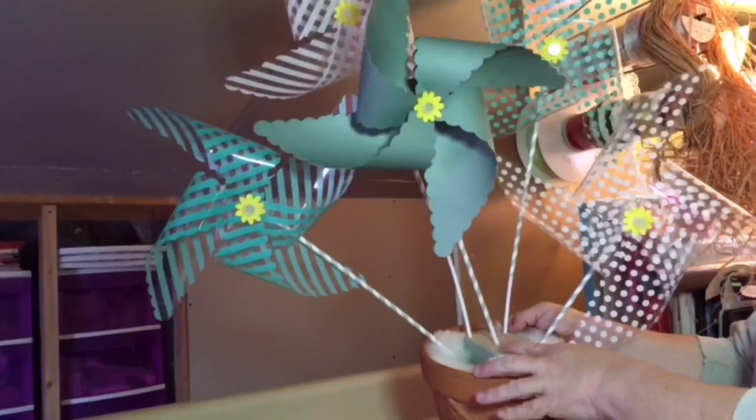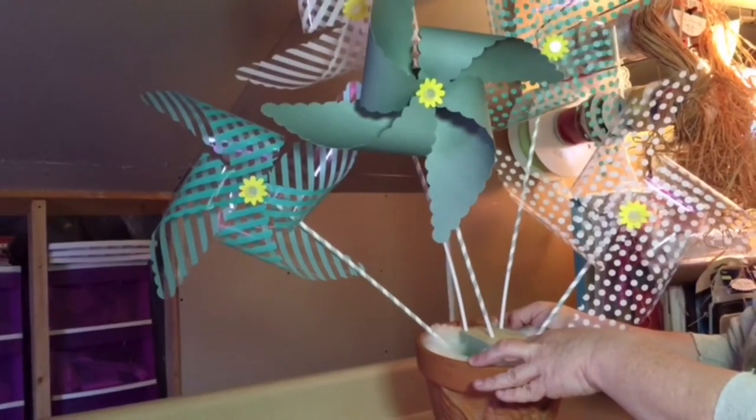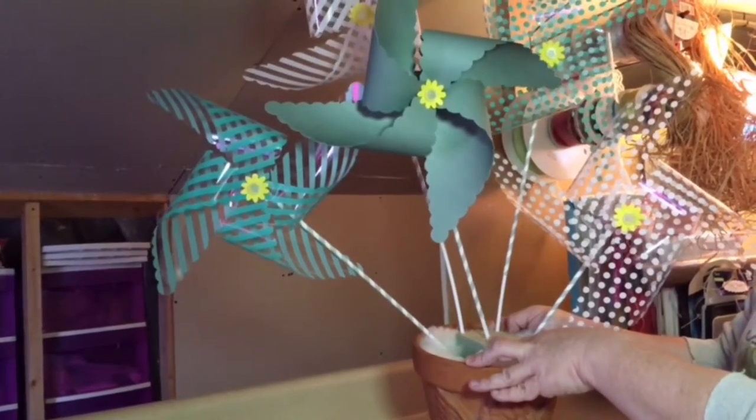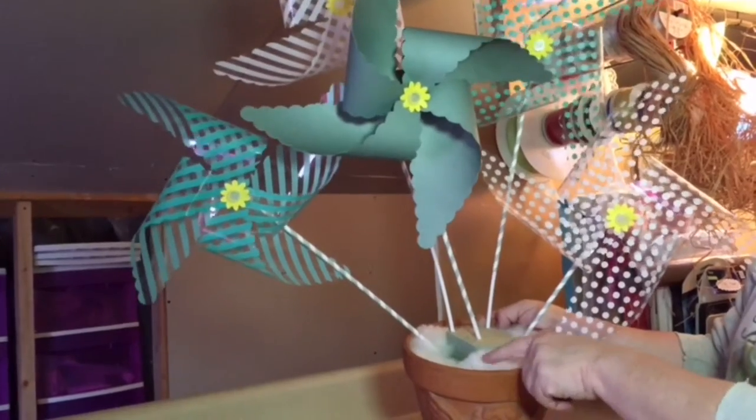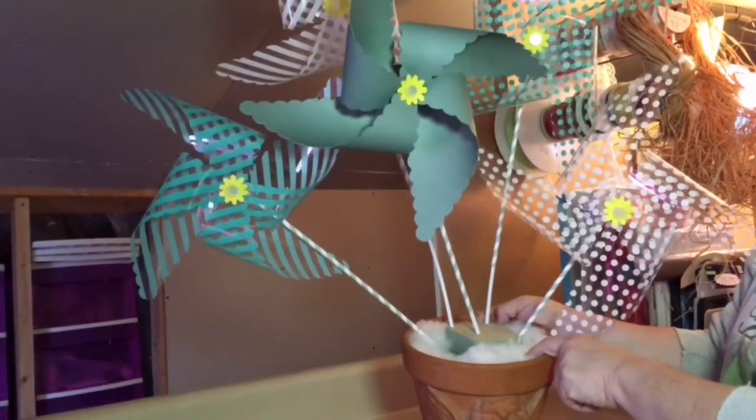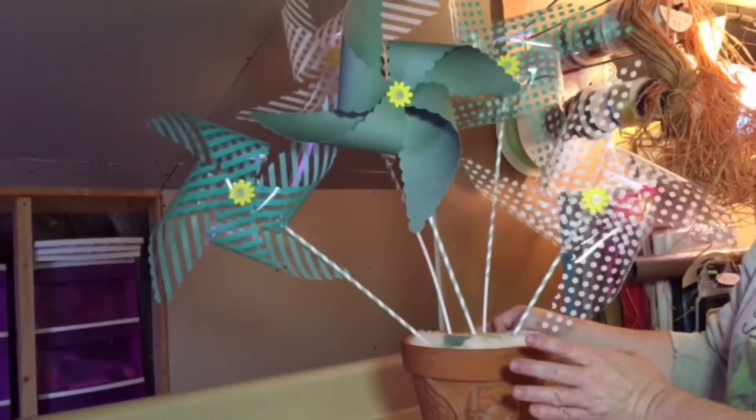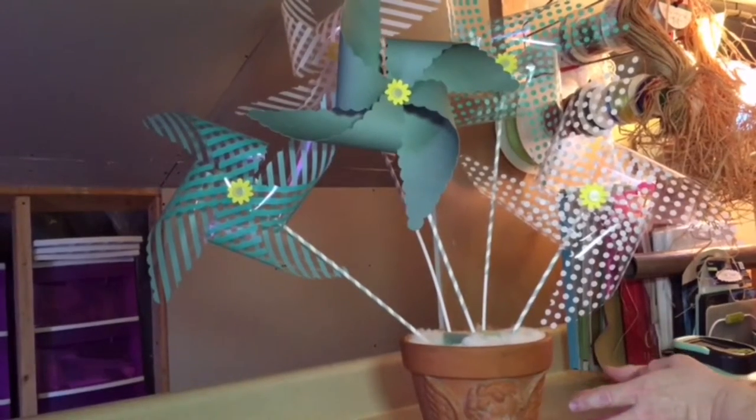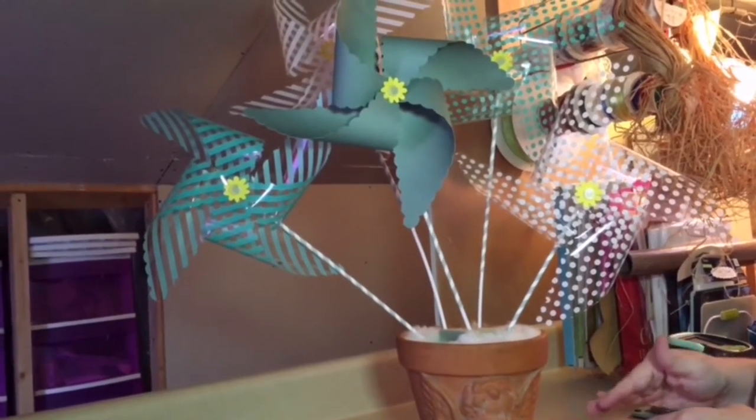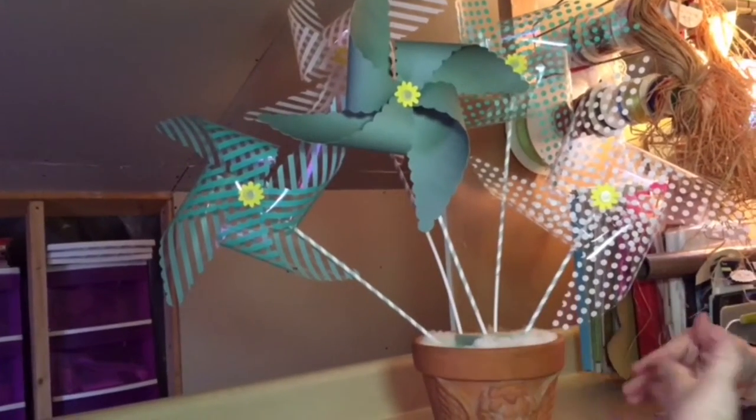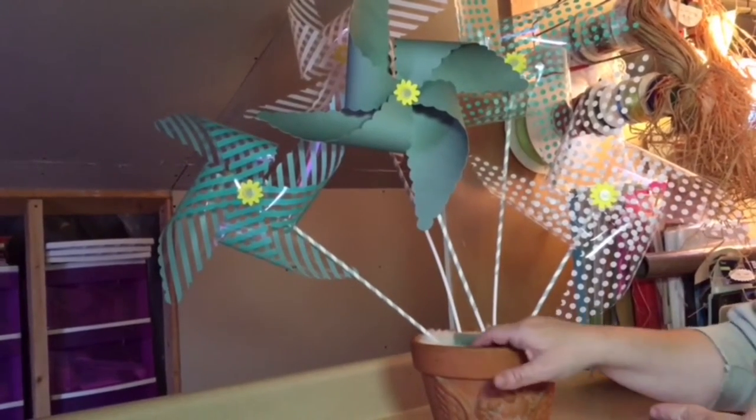I used some floral foam that is for dried or silk flowers in the bottom of this, and then I used a little bit of buffalo snow to secure that foam exactly where I wanted it. Even when I cut it down to size and stuck the second piece right here, it was still wobbling in there.